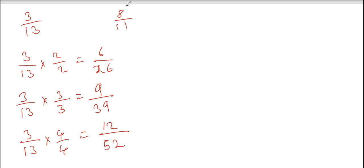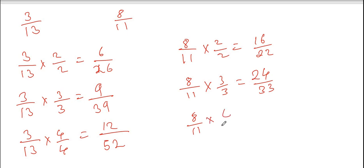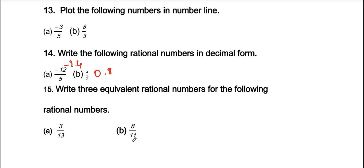Now for 8/11: 8/11 multiplied by 2/2 gives 16/22. 8/11 multiplied by 3/3 gives 24/33. 8/11 multiplied by 4/4 gives 32/44. So the three equivalent rational numbers for 8/11 are 16/22, 24/33, and 32/44. These are the equivalent rational numbers.